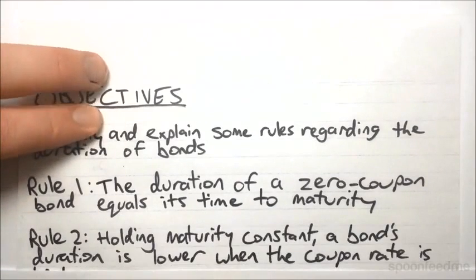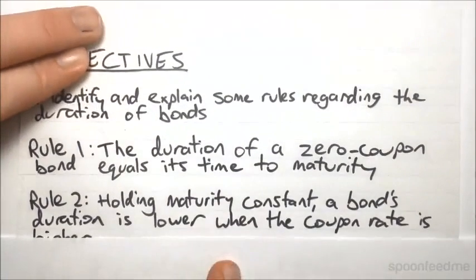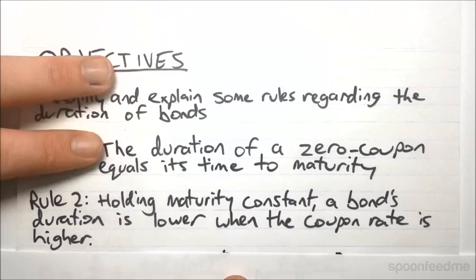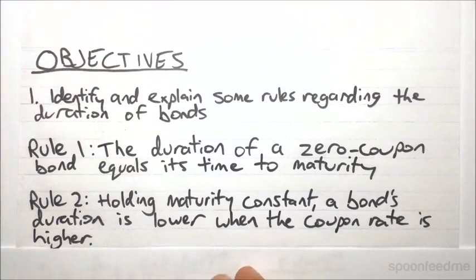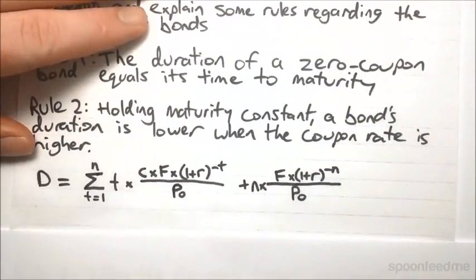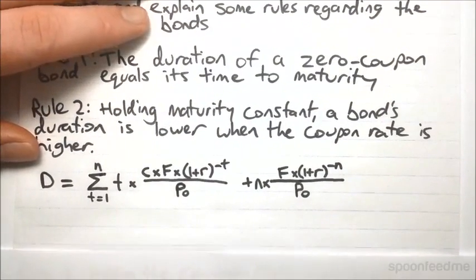So we'll move straight on. Rule number two: if you hold the maturity constant, a bond's duration is lower when the coupon rate is higher. So to get an idea of how this works, we can have a look at the formula for the duration of a bond.